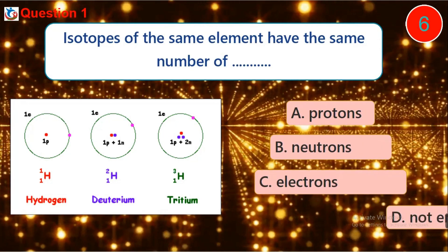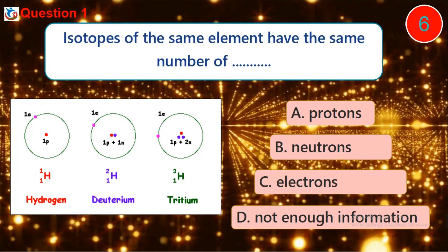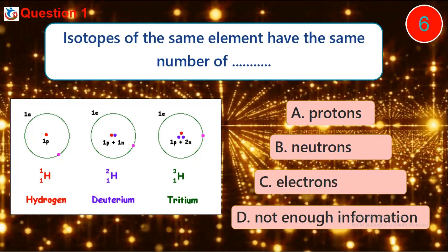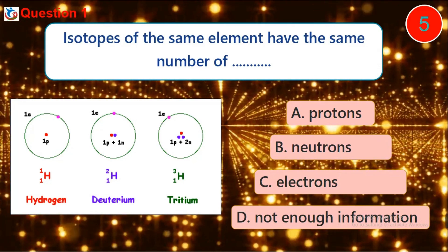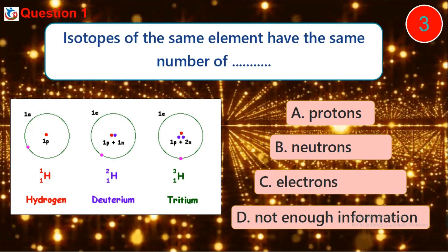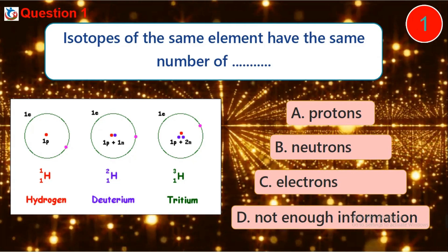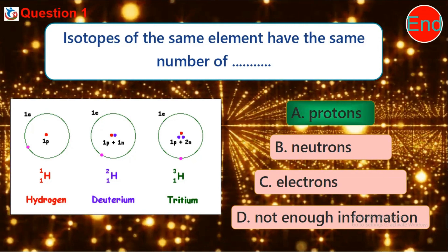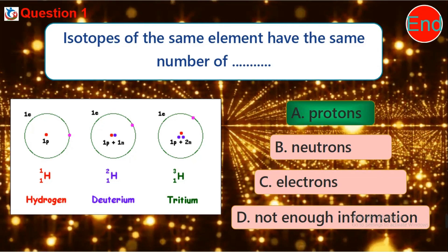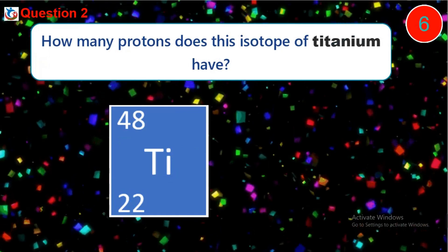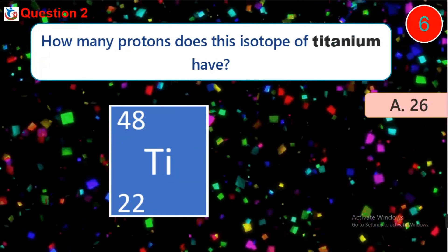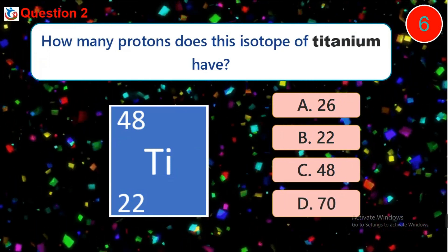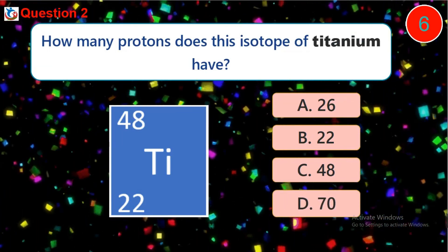A. protons, B. neutrons, C. electrons, D. not enough information. Question two: how many protons does this isotope of titanium have? A. 26, B. 22, C. 48, D. 70.